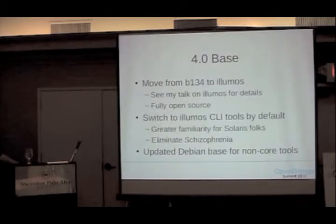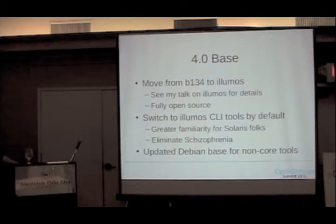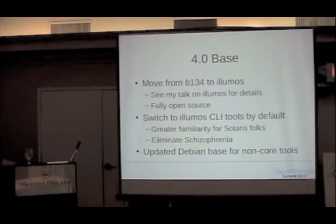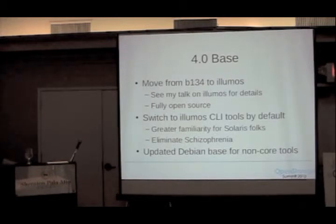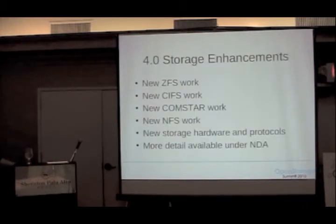The 4.0 base plan: we're going to move from build 134 to Illumos. The point of this is primarily that we'll be fully open source, or at least mostly fully open source. We'll also be switching the command line tools to the Illumos Solaris baseline from the GNU baseline. The differences and key differentiators for the GNU tools have been pretty much resolved. It's going to be more familiar for those coming from a Solaris background, and we're getting rid of the whole schizophrenia with the Sun personality. We're also updating the Debian base to a newer version for the non-Illumos bits.